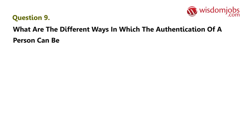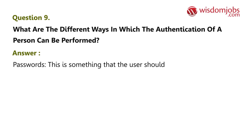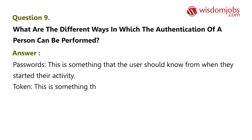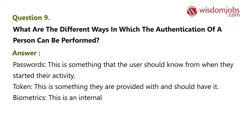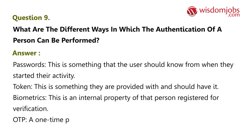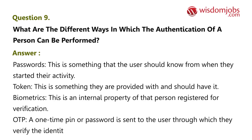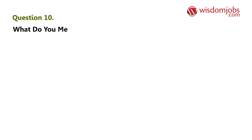Question nine: what are the different ways in which the authentication of a person can be performed? Answer: passwords — something the user should know; token — something they are provided with and should have; biometrics — an internal property of that person registered for verification; OTP — a one-time pin or password sent to the user through which they verify their identity.